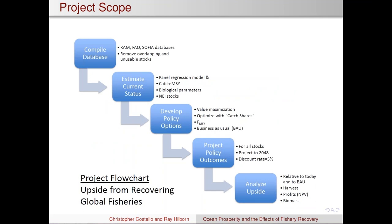Secondly, what would be the costs of engaging in that kind of reform, and what are the distributional effects across countries? And finally, does it take 50 years or five years to achieve recovery targets, and how does that differ across countries? This is part of a large body of work including researchers at the University of Washington, the Environmental Defense Fund, our team at UC Santa Barbara, and Matt Elliott at California Environmental Associates. We've compiled a new database including stock assessments and FAO data to estimate the current status of about 5,000 fisheries worldwide, and developed policy scenarios to project into the future.